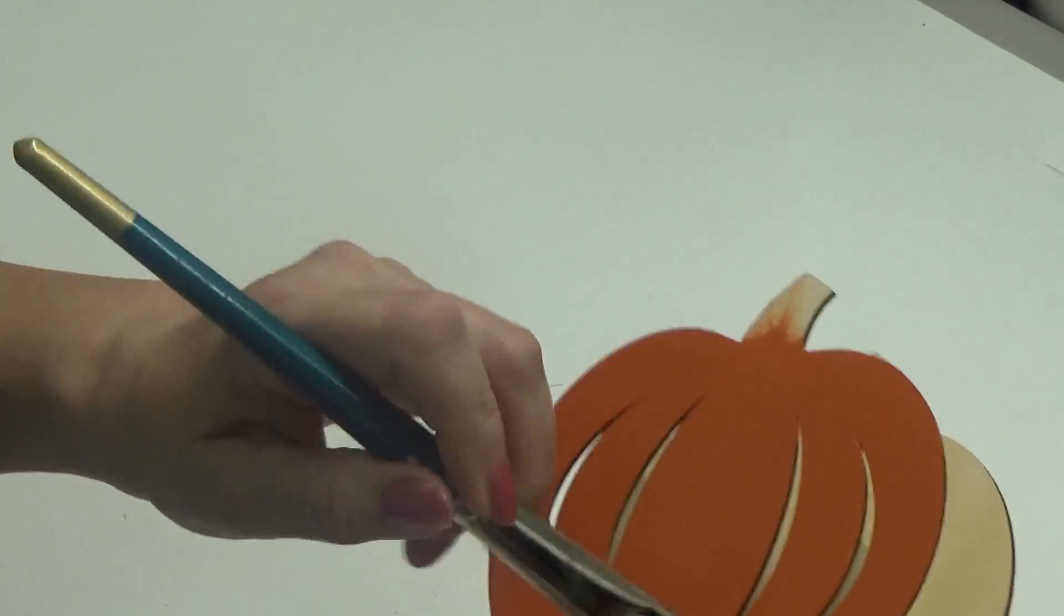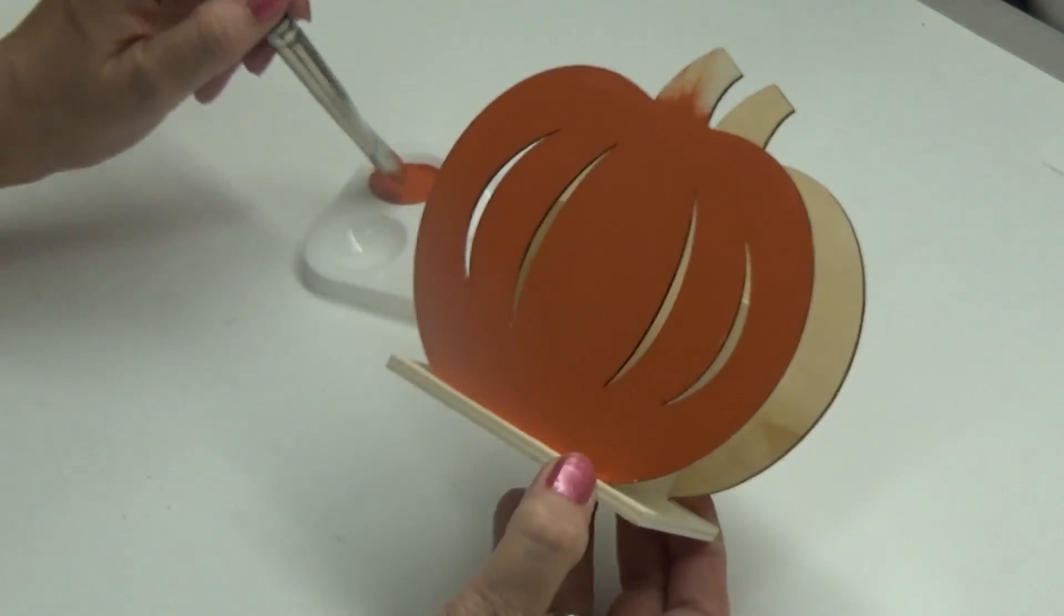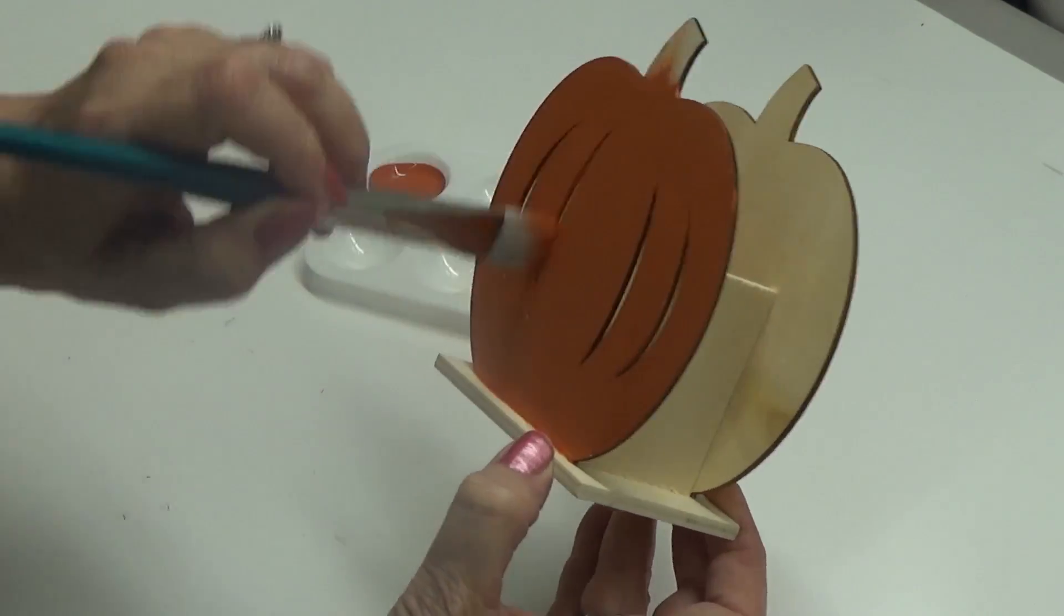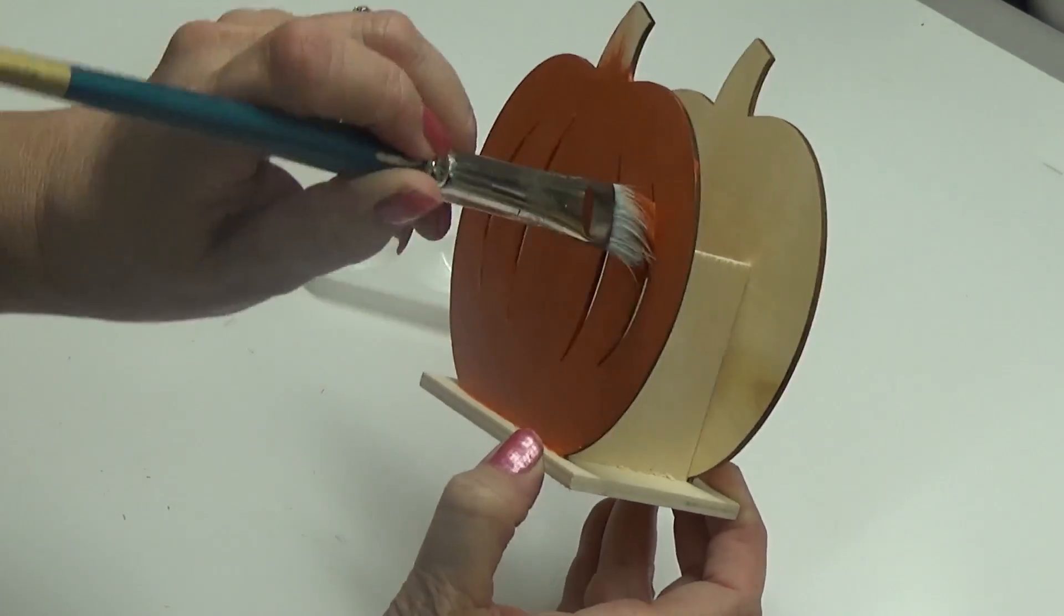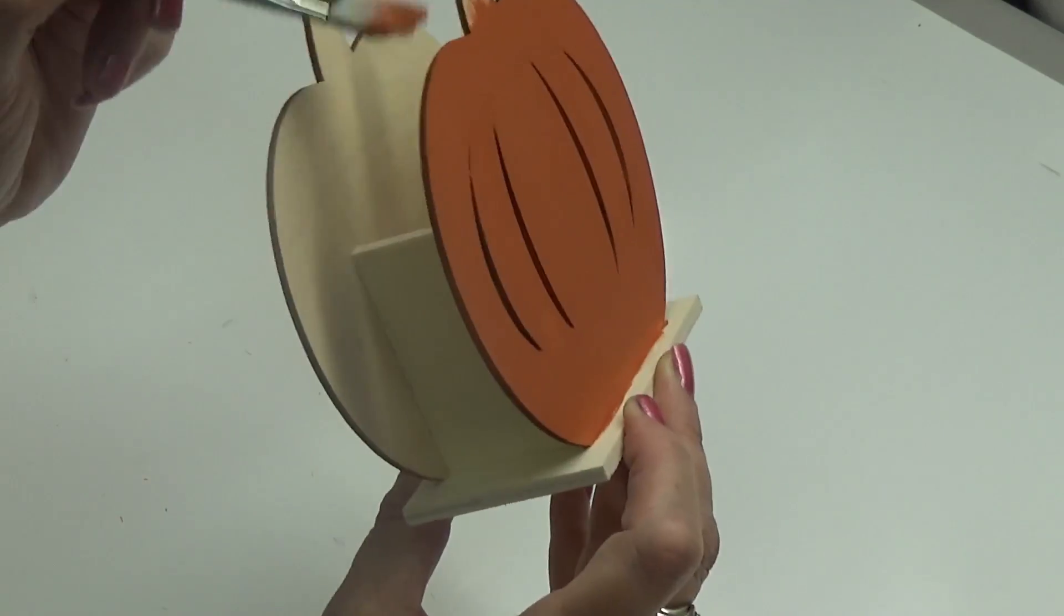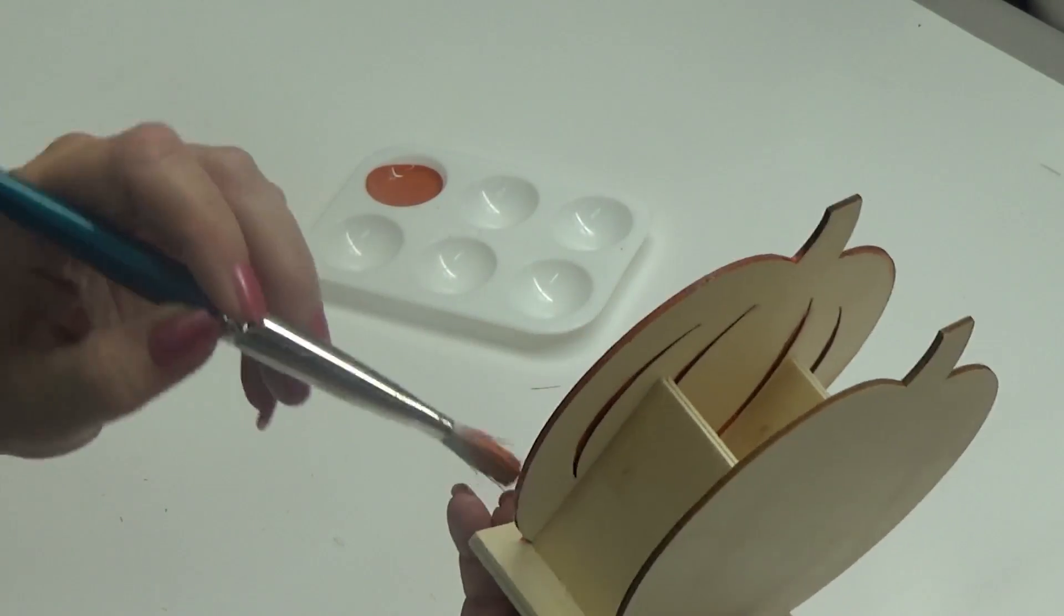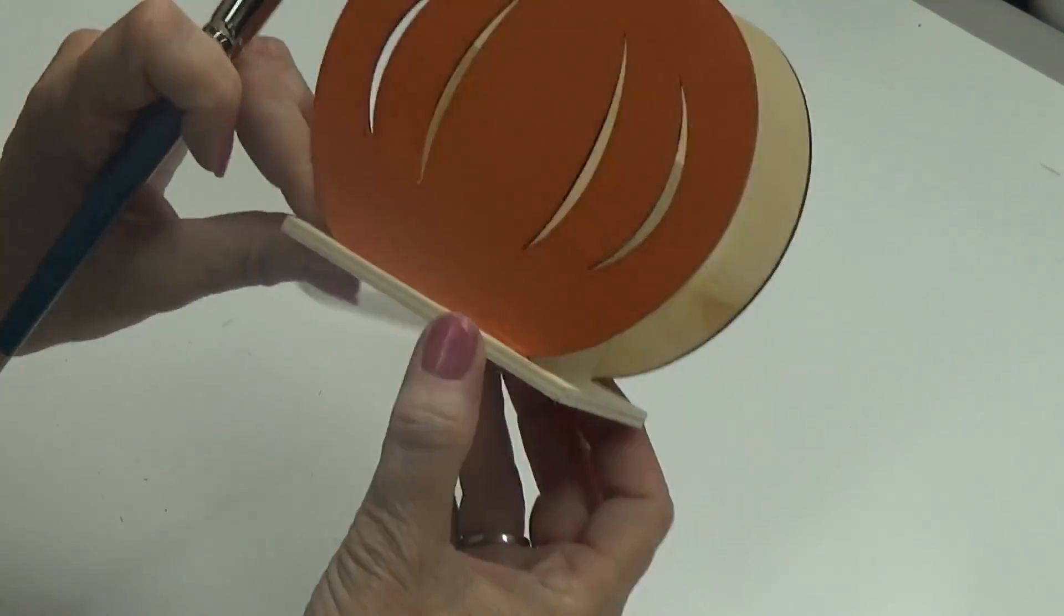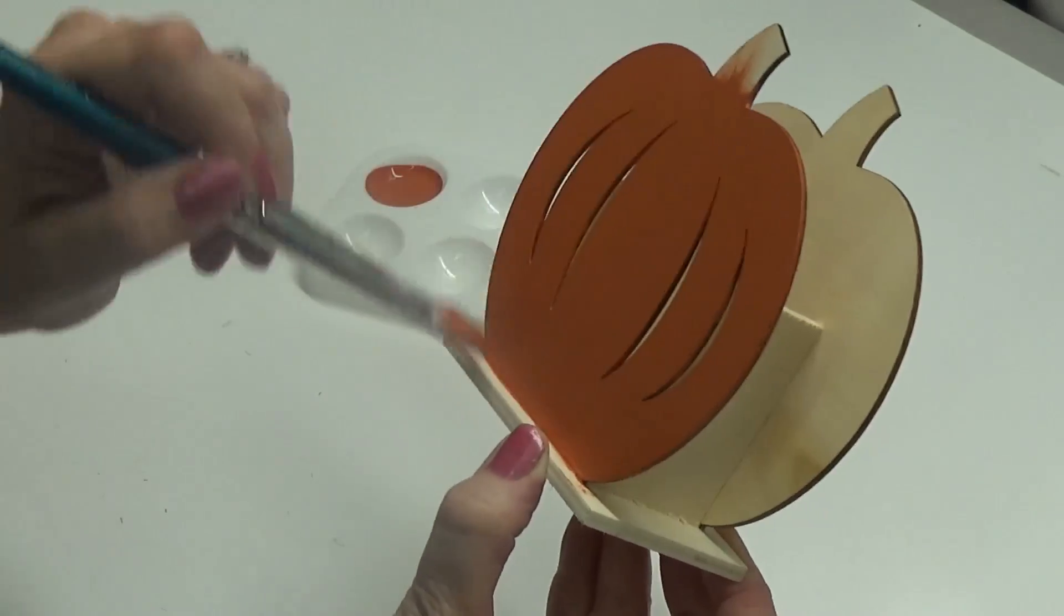My camera messed up and missed part of the beginning where I was painting the orange, but you can see I'm painting it a pumpkin orange. I'm painting the edges - you don't have to, you can stain them if that's what you prefer, it's just up to you.